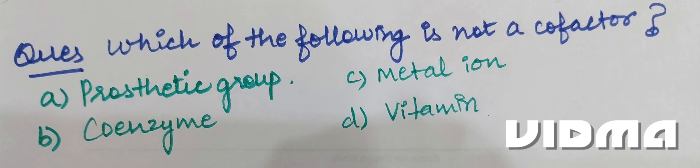Hello everyone, question of the day is: which of the following is not a co-factor? Option A, prosthetic group. Option B, co-enzyme. Option C, metal ion. Option D, vitamin.